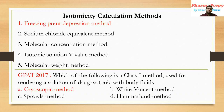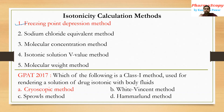There are five major methods to calculate isotonicity: freezing point depression, sodium chloride equivalent method, molecular concentration method, isotonic solution V method, and molecular weight method. From the GPAT point of view, the most important method is freezing point depression, because each year there is at least one pharmaceutical calculation question on isotonicity and they always ask the freezing point depression method.